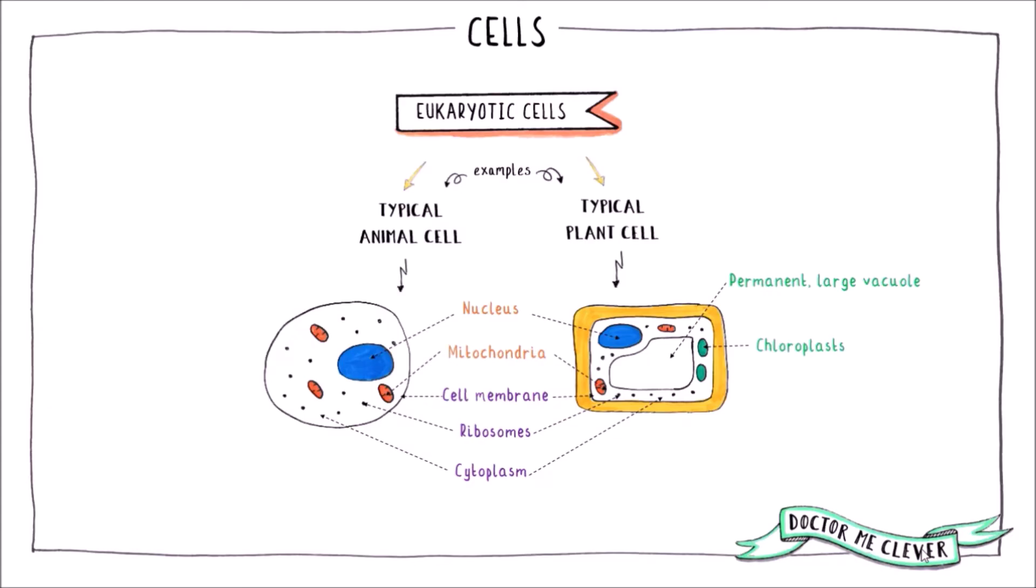Chloroplasts that contain the green pigment chlorophyll, this is where photosynthesis occurs. And a cell wall made from the carbohydrate cellulose, this provides the plant with structure and strength.